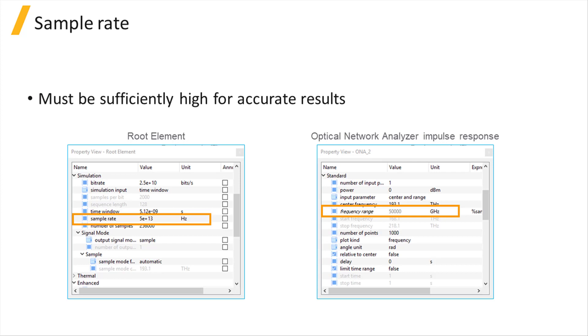For transient sample mode simulations, the sample rate must be sufficiently high for accurate results. In the following, we'll provide some practical tips for choosing an appropriate sample rate.